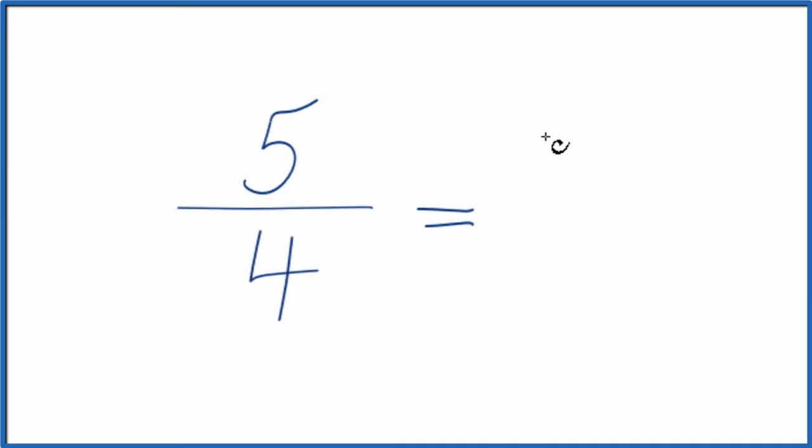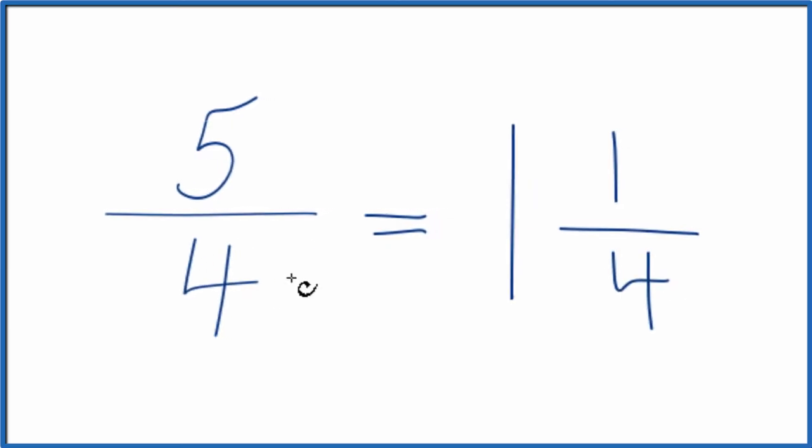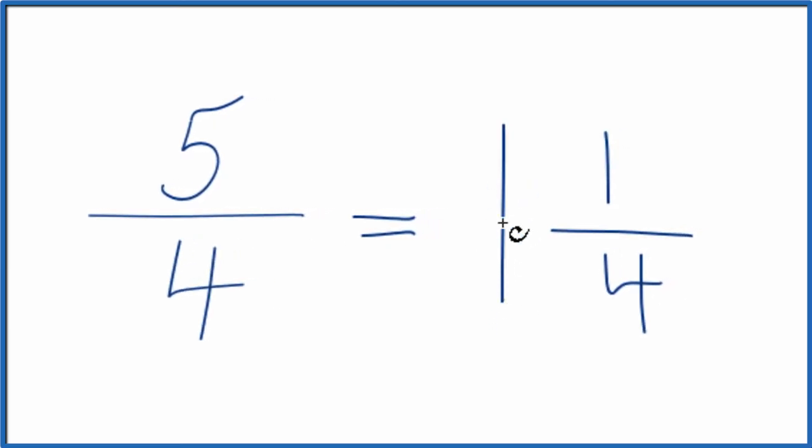So 4 goes into 5 one time with 1 left over. Bring the 4 across, and 5/4, that's equal to this mixed number 1 and 1/4.